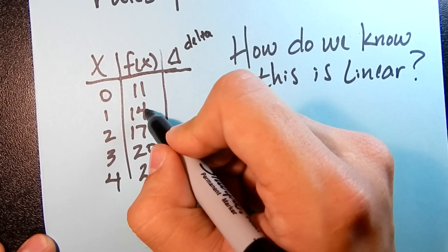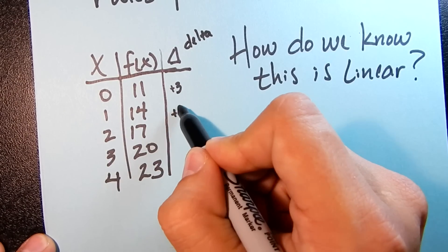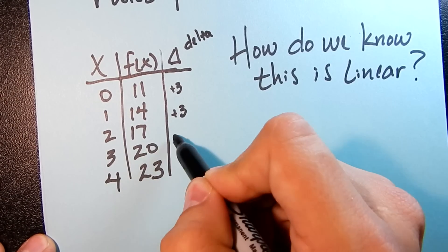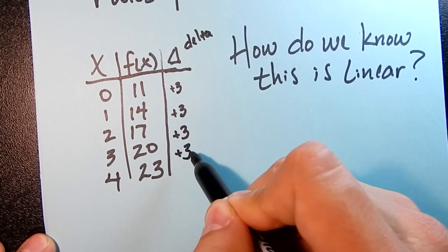So from 11 to 14, we added 3. From 14 to 17, we added 3. From 17 to 20, we added 3. And from 20 to 23, we also added 3.